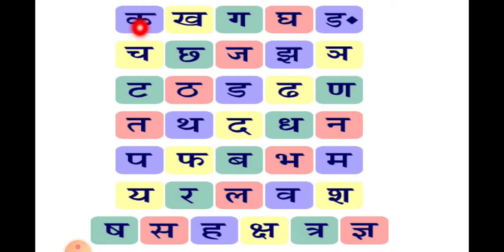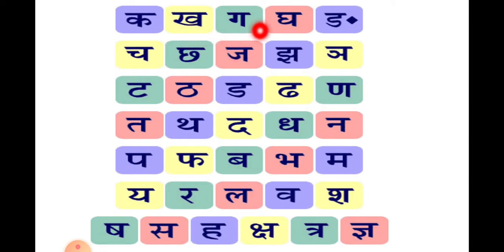यह क्या है? क — कमल का क। खरगोश का ख। गमला का ग। घड़ी का घ।